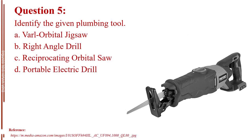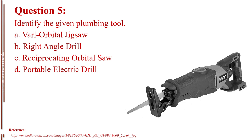Question number five. Identify the given plumbing tool. Letter A, varl orbital jigsaw. Letter B, right angle drill. Letter C, reciprocating orbital saw. Letter D, portable electric drill. The answer is Letter C, reciprocating orbital saw.